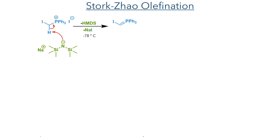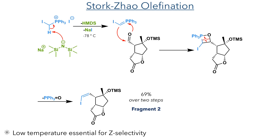In the next step, the aldehyde took part in a Horner-Wadsworth-Emmons olefination. Methyl triphenylphosphonium iodide is firstly deprotonated by sodium HMDS, forming a ylide. This adds to the aldehyde in a mechanism similar to a Wittig reaction, forming a four-membered oxaphosphetane ring. This ring collapses to eliminate triphenylphosphine oxide and form the target iodoalkene with Z configuration in a 69% yield over two steps. The low temperature and the choice of base are essential for selectivity in this reaction, as changes to these conditions also allow for the E-alkene to form.